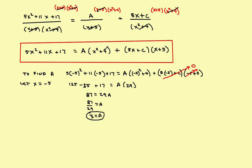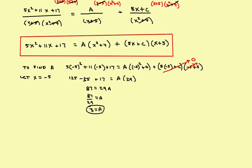In previous videos without quadratic factors, you could eliminate each term by choosing a specific x value. But here, no matter what x you pick, x² + 4 will never be zero. So with quadratic terms, a different approach is needed: expand the equation and combine like terms to find B and C.